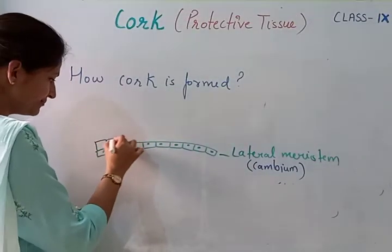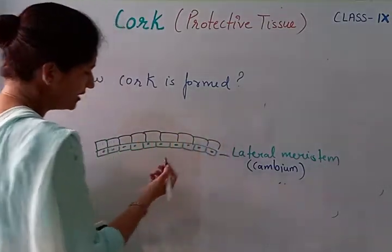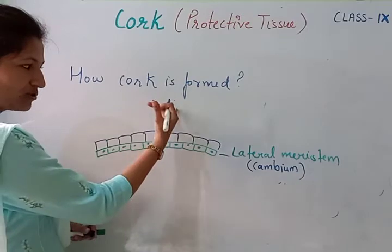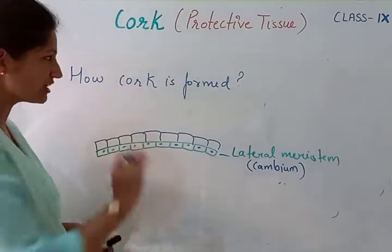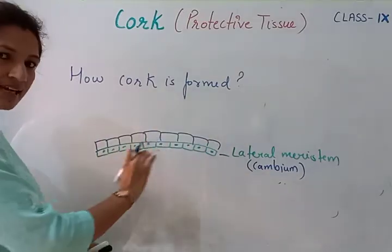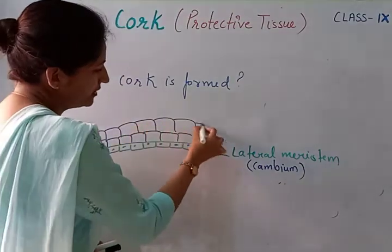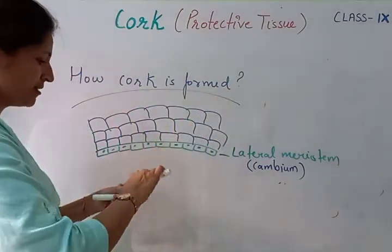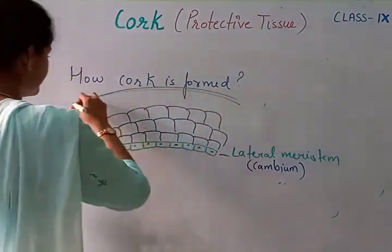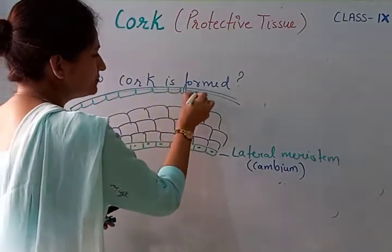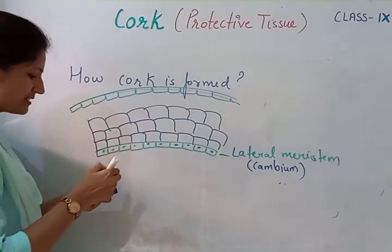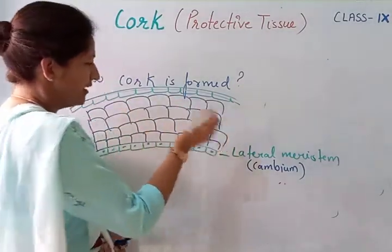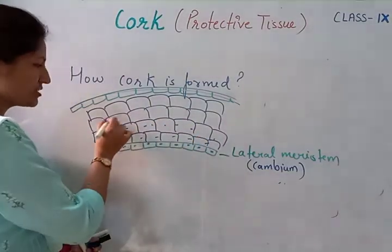This cambium is going to divide in this way. It will divide on the outside also and on the inner side also. It means layers of cells are added on the outer side as well as the inner side. Here we are talking about cork, so we will focus on the external side, the cells forming on the outer side. In this way, layers of cells will keep on forming. And epidermis is present outside as the outermost covering. As these layers keep on dividing, they form multi-layered tissue — which was one of the characteristics of cork.